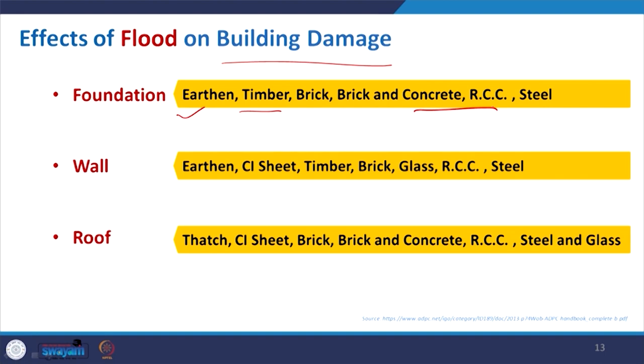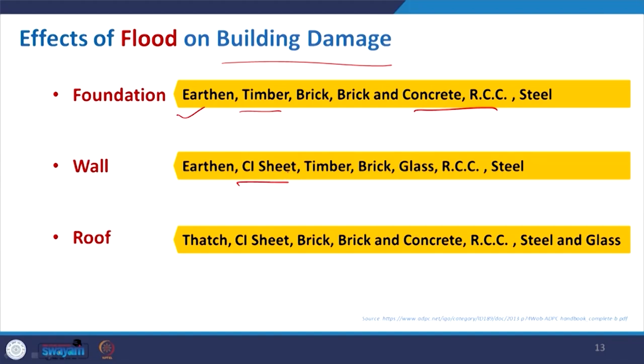Above the ground, where water first strikes the wall, earthen material will become porous and soften during prolonged flooding, leading to collapse. Cast iron sheet walls used in low-cost construction are also not strong enough. Brick masonry walls will depend on their structural age. The degree of damage depends on whether the wall material is glass, brick, or RCC.